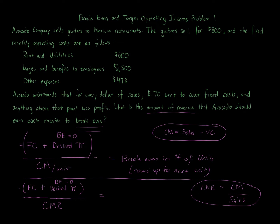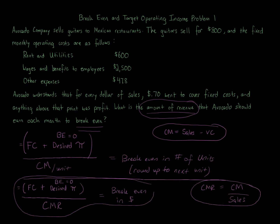This is the break-even formula in revenue, or dollars. We're asked for the amount of revenue, so we use the bottom formula: fixed costs plus desired profit (zero, since it's break even) divided by the contribution margin ratio. That amount in dollars gives us the break-even in dollars. Let's start with the numerator — our fixed costs — adding zero for desired profit since this is a break-even question.